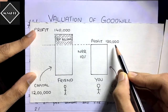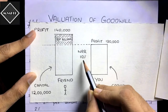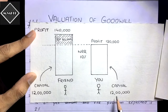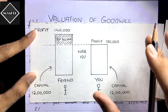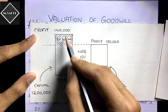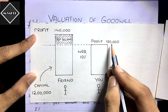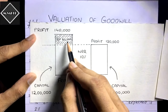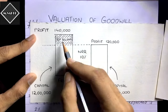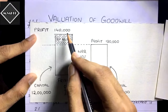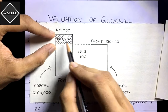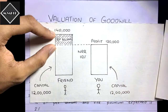Since you are a new player in the market, in the first year you have earned a profit of one lakh twenty thousand — which is 10 percent of 12 lakh, the normal rate of return. But your friend is earning one lakh forty thousand — more than the normal profit. So your friend is earning a super profit of twenty thousand.